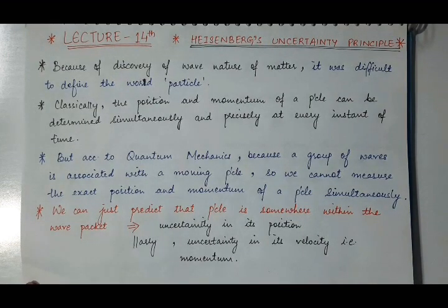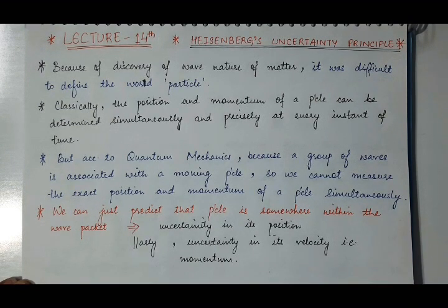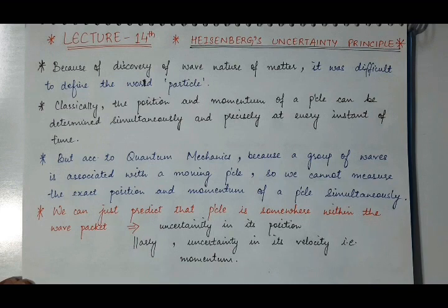The next topic is Heisenberg's uncertainty principle. Because according to the de Broglie hypothesis, a wave is associated with every moving material particle. So just because of the discovery of this wave nature of matter, it became difficult to define the word 'particle'.